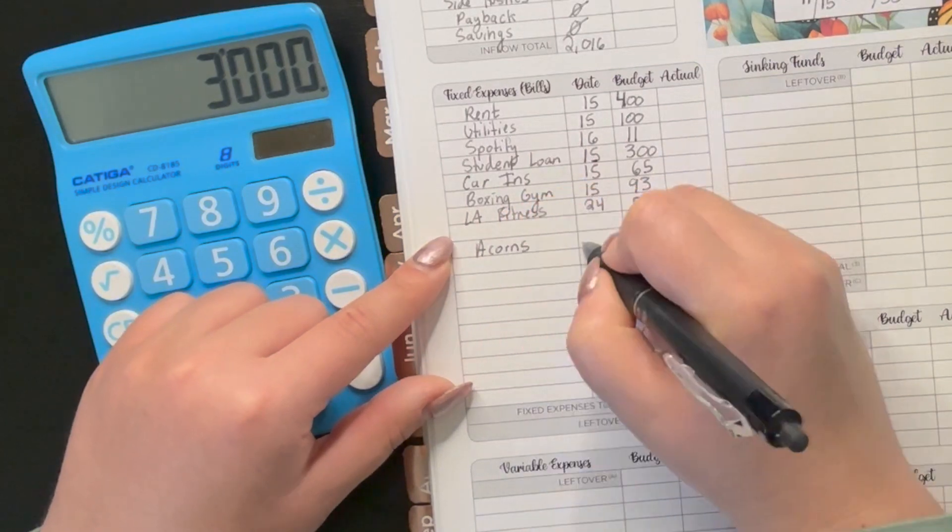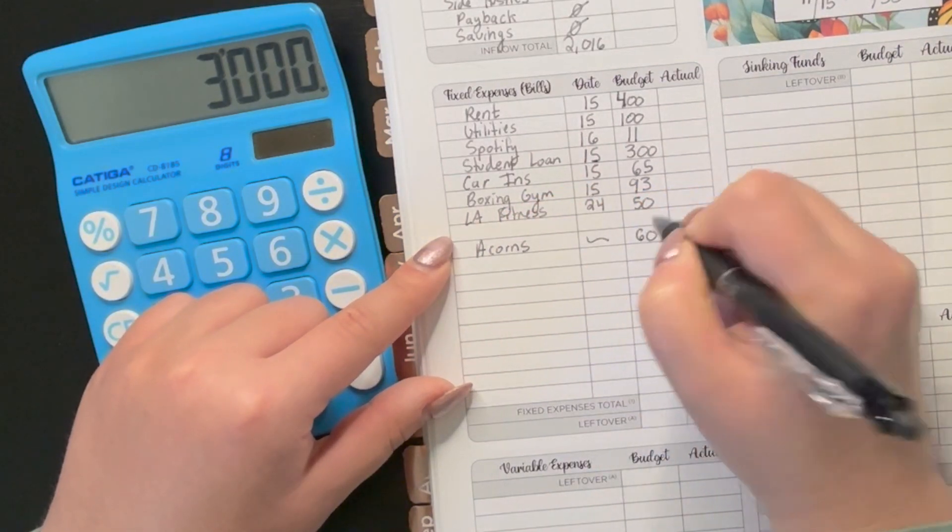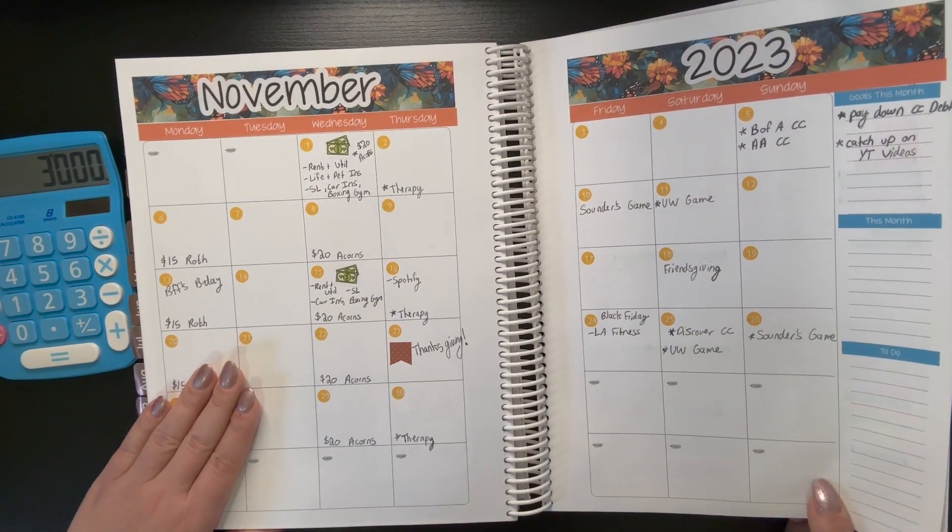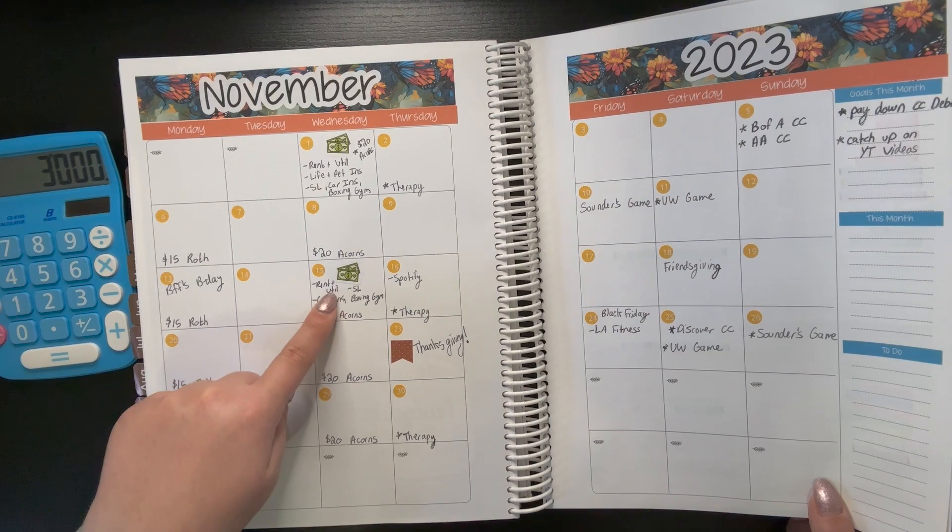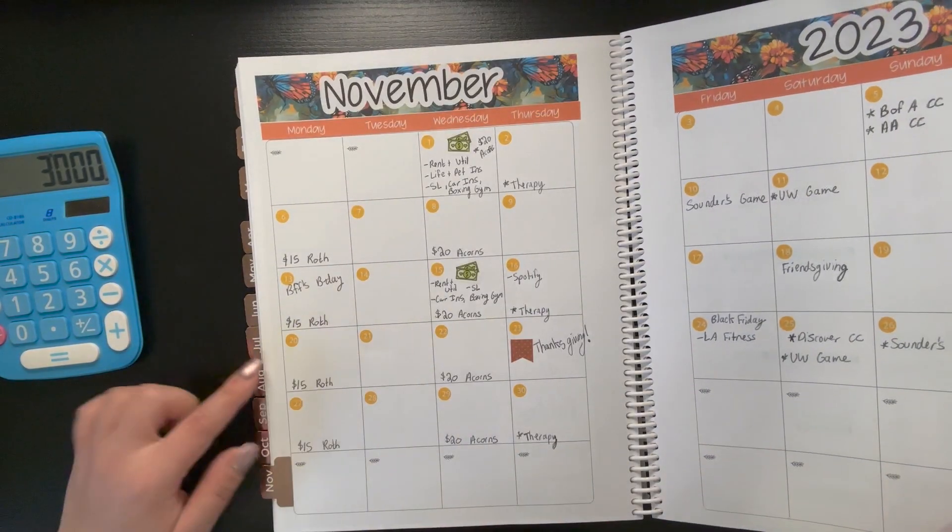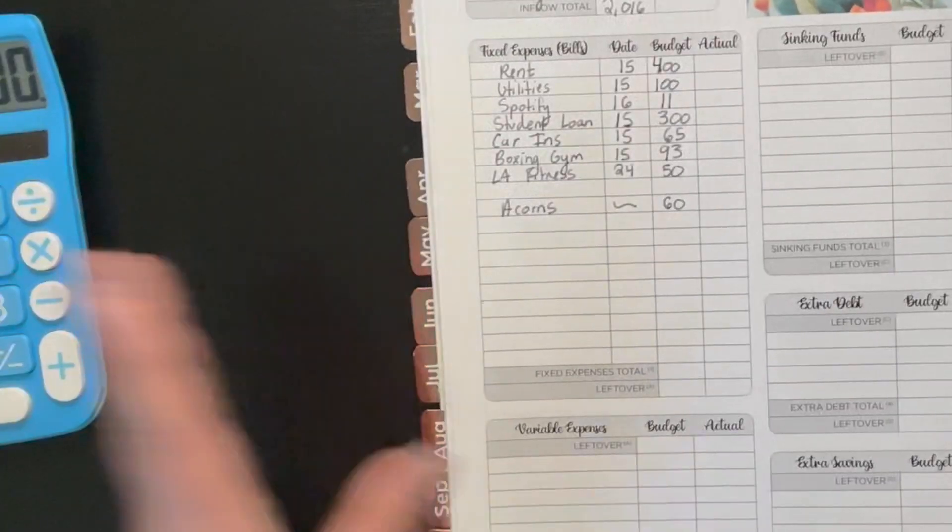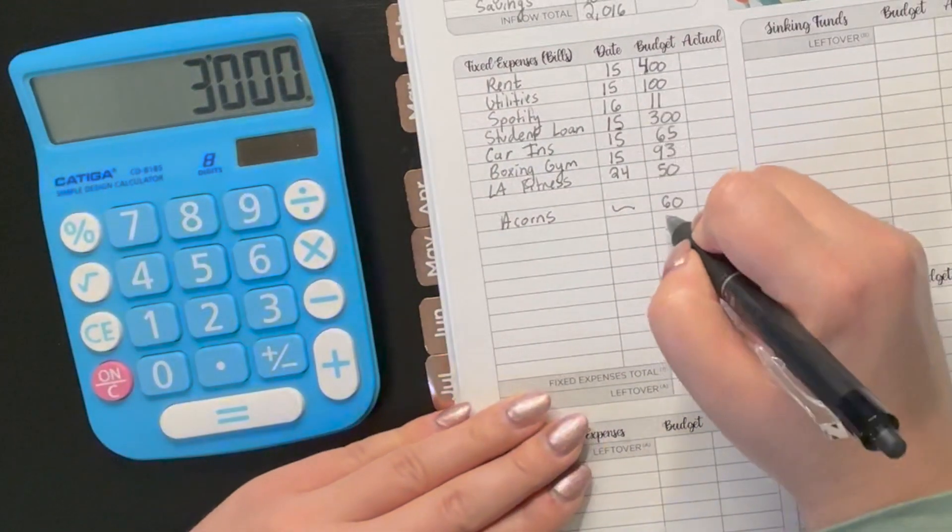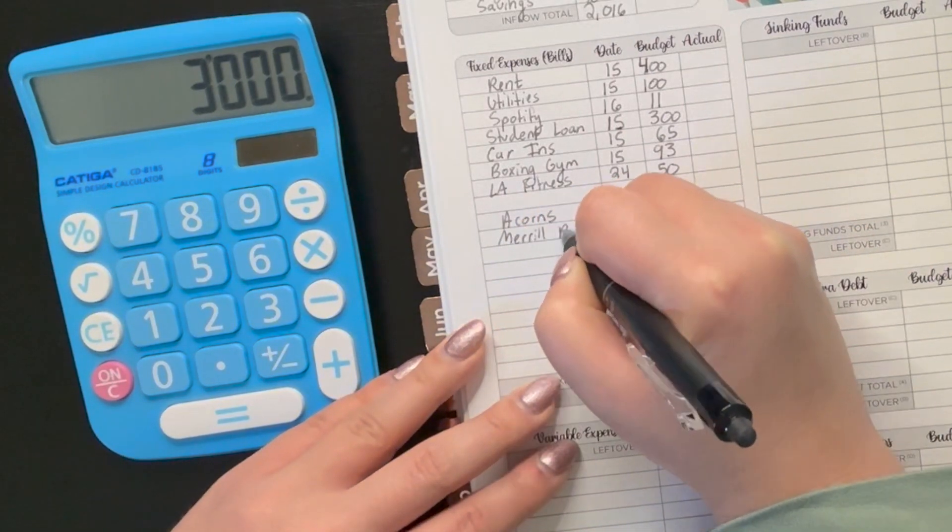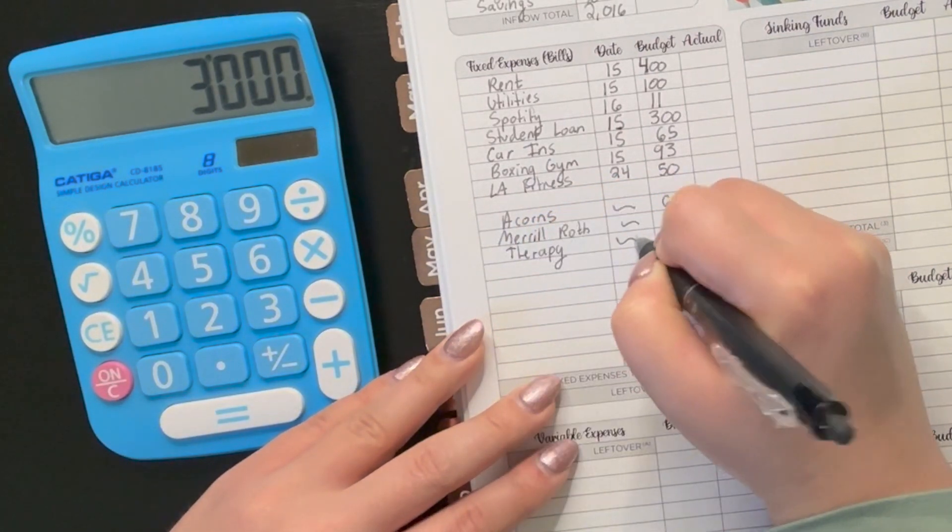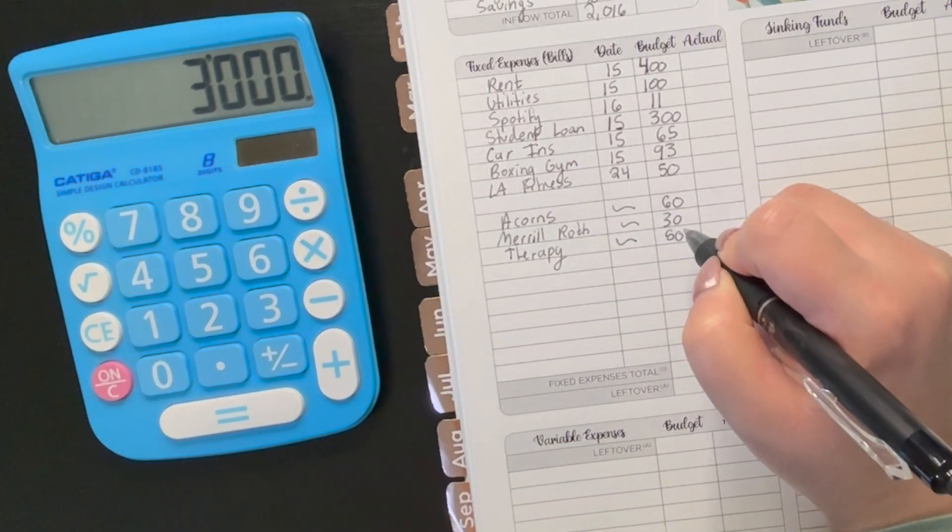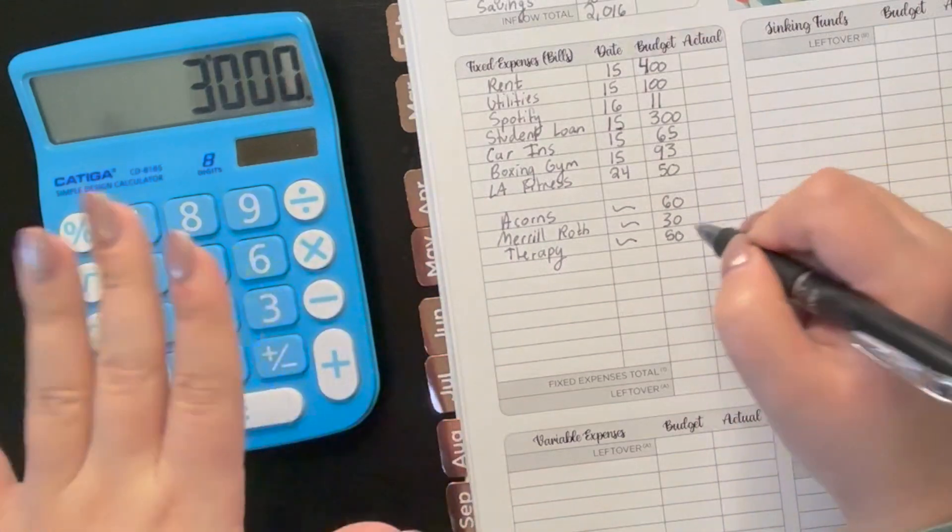Then we have acorns, which is going to be $60 because we have three Wednesdays in this budget paycheck period. So we've got one, two, three Wednesdays, and it's $20 for each. And then the Roth, we just have two. So that will be $30 for the Roth, which is through Merrill Roth. And then we have therapy, which will be $50 because I also have two sessions in this budget period because of the way the Thursdays are structured.